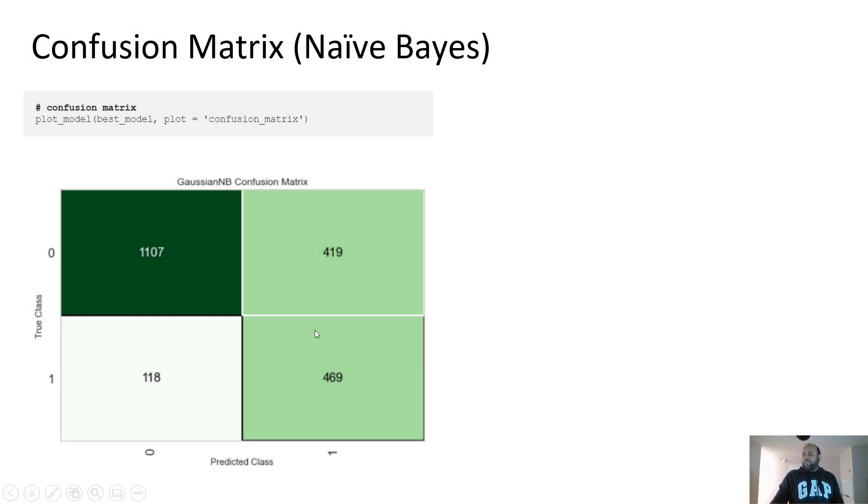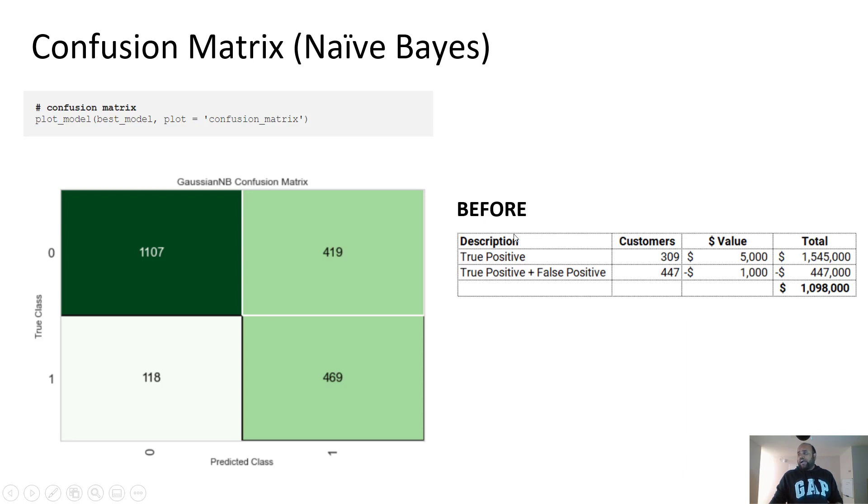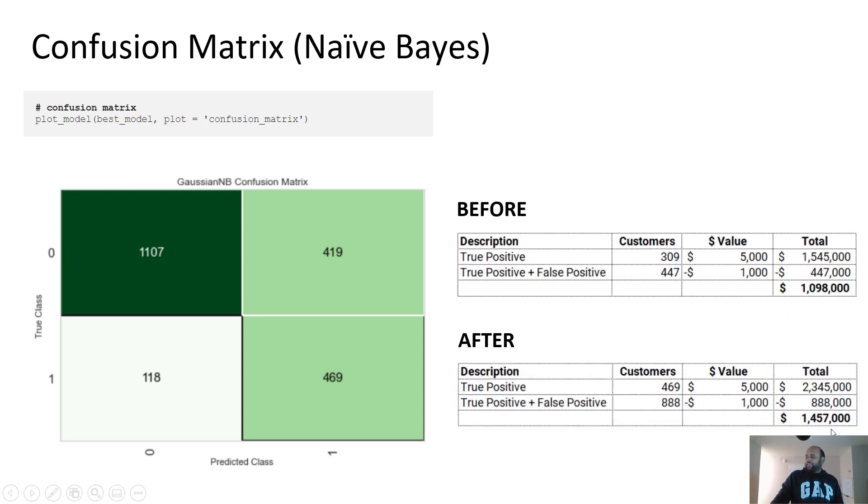This is the new confusion matrix. Obviously, when you sum this, the numbers are still 2000. But the proportion between true positive, false positive and false negative has changed. So this was before 1.1 million. And this is after so using naive Bayes, we are now making 1.5 million approximately 1.45 million over 2000 customers.